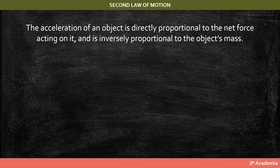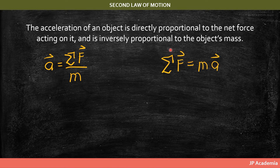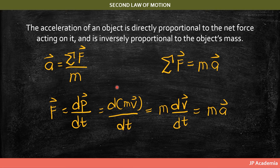Newton's second law states that the acceleration of an object is directly proportional to the net force acting on it and inversely proportional to the object's mass. If a net force F acts on an object of mass M, the object will have acceleration A — for objects and systems with constant mass M. We write this as: the summation of forces equals MA. The second law can also be stated as the rate of change of momentum of a body over time being directly proportional to the applied force.